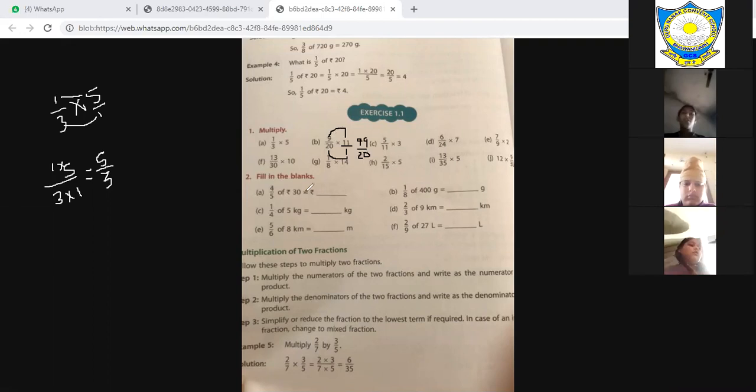Second question is, what is four by five of rupees thirty? Four by five of rupees thirty?